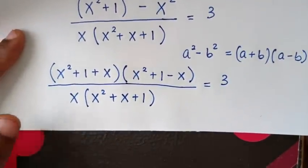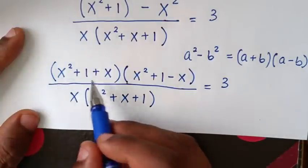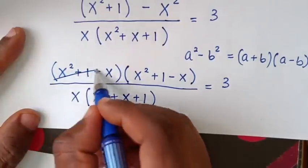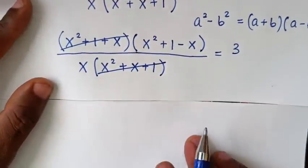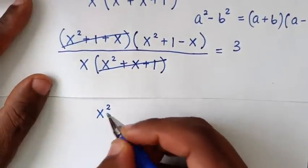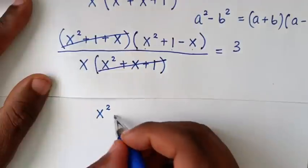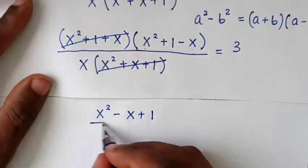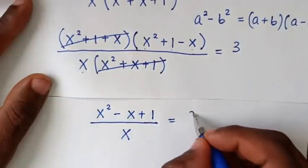We can simplify because (x² + x + 1) appears in both the numerator and denominator, so they cancel. What remains in the numerator is (x² − x + 1), over x, equal to 3.